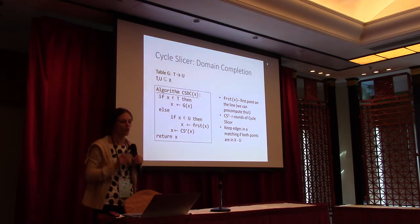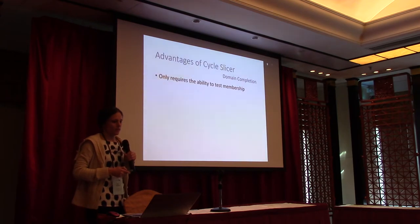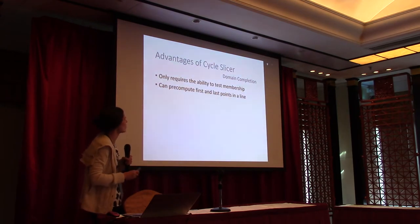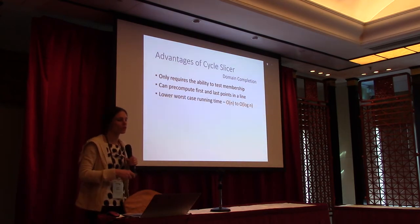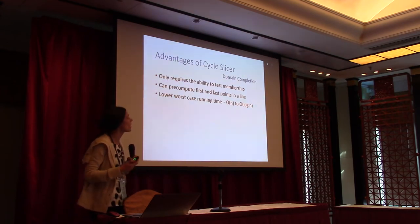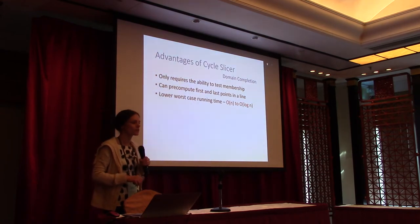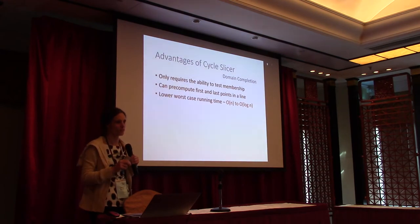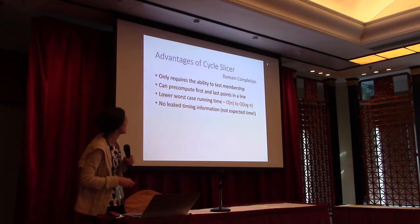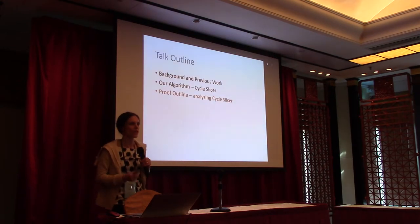The inclusion function keeps edges in the matching only if both points are in X minus the table set. Advantages: we only need to test membership, we can pre-compute first and last, and this lowers the worst case running time from O(N) to O(log N). Just like reverse cycle walking, a single step doesn't give a random permutation — we have to run multiple steps, so we analyze that process. It's no longer an expected-time algorithm, but we get other benefits similar to those from reverse cycle walking.